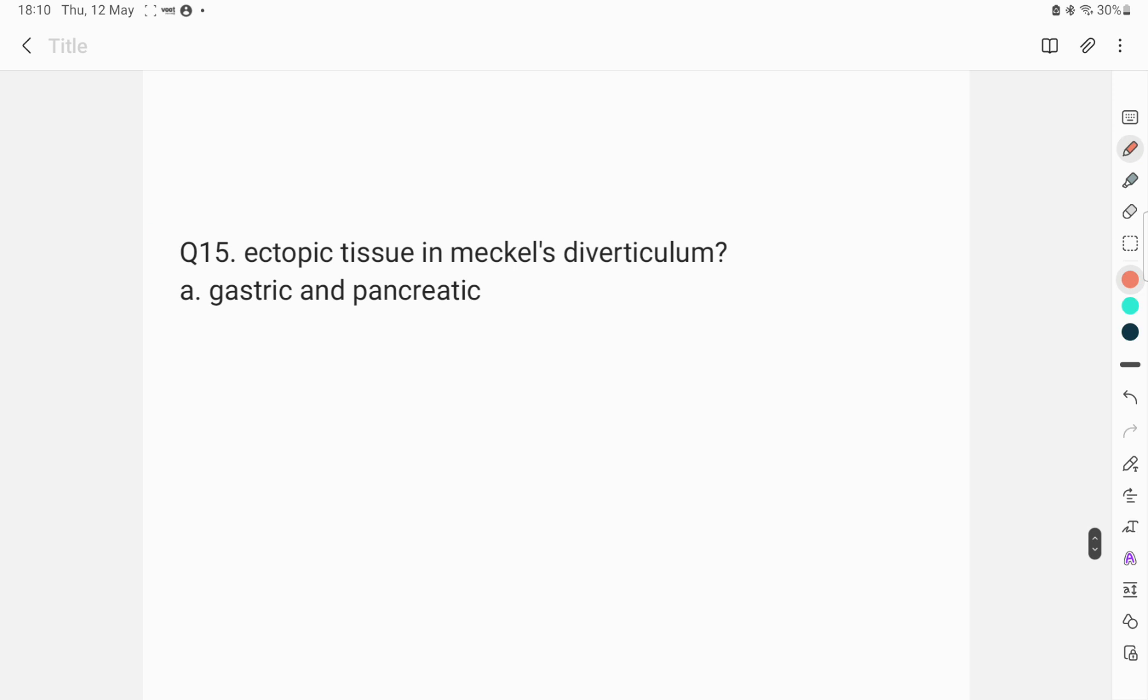The last question was ectopic tissue in Meckel's diverticulum is gastric and pancreatic. We read the rule of two in Meckel's diverticulum. One of the rule is two types of ectopic tissues are seen that are gastric and pancreatic and sometimes ileal tissue can also be seen. So, the answer to this question was gastric and pancreatic.